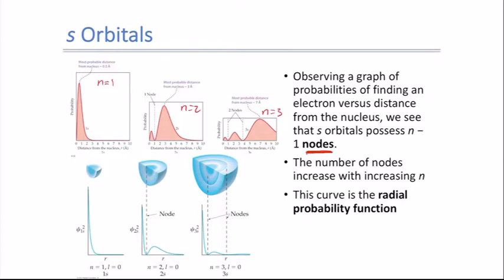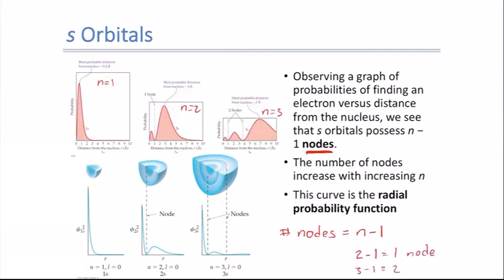Those spots of zero probability are called nodes. The number of nodes equals N minus 1. So for N=1, there are 0 nodes; for N=2, there is 1 node; and for N=3, there are 2 nodes. We can see these nodes in cutout diagrams of the orbitals as the boundary lines between regions.